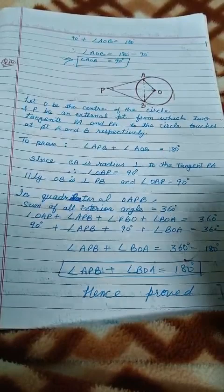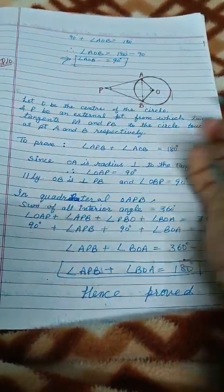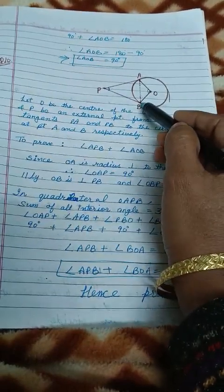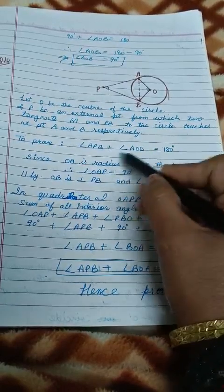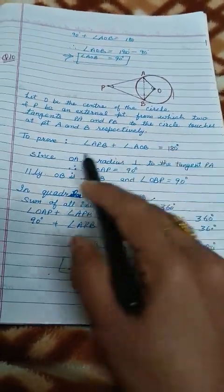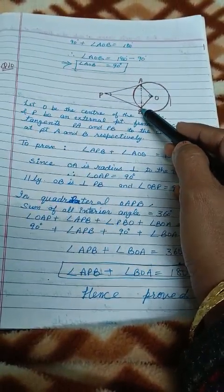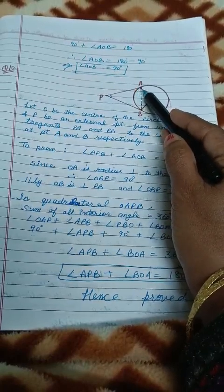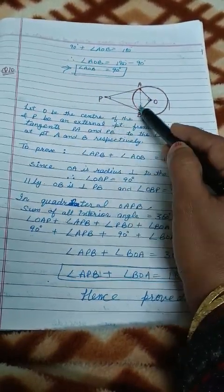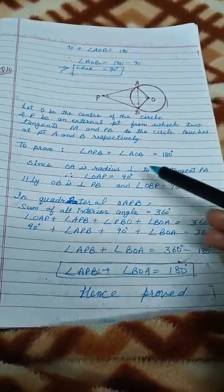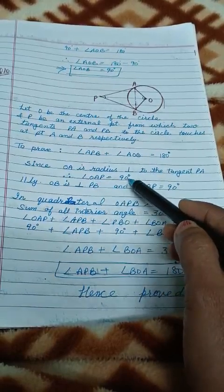अब देखो सबसे पहले हम यह लिख लेंगे कि O center है circle का, P जो है वो external point है from which two tangents PA and PB to the circle, जो A और B point पे touch होते हैं। Then prove क्या करना है — angle APB plus angle AOB का sum 180 होगा, मतलब यह angle supplementary हुए। Since OA और OB radius हैं, और radius to the tangent perpendicular होते हैं, तो angle OAP = 90° similarly angle OBP = 90°।